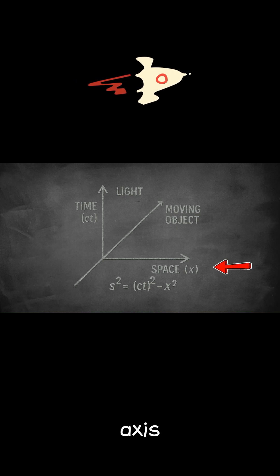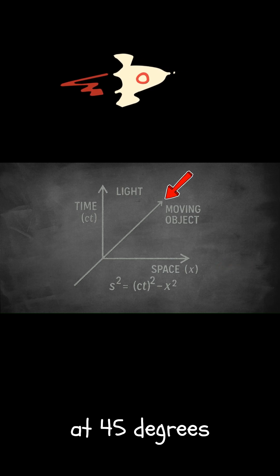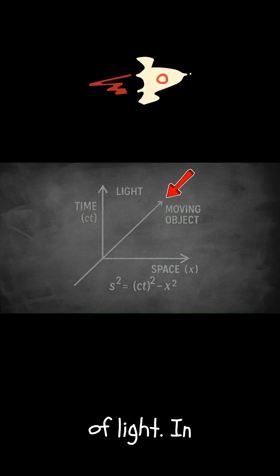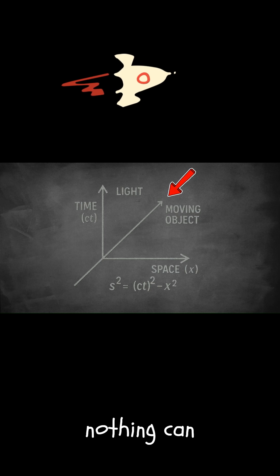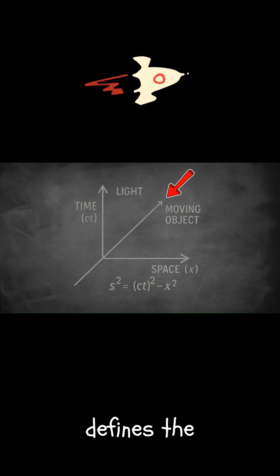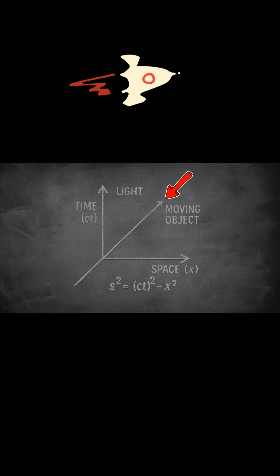The horizontal axis represents space in one direction, labeled X. The diagonal line at 45 degrees shows the path of light. In relativity, nothing can move faster than this line. It defines the edge of what we call the light cone, the limit of how fast information or matter can travel.